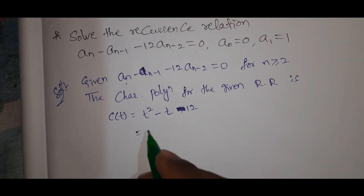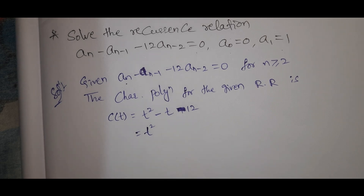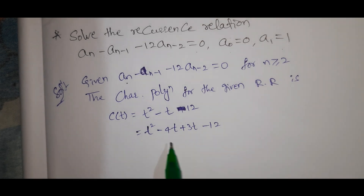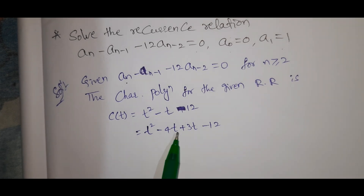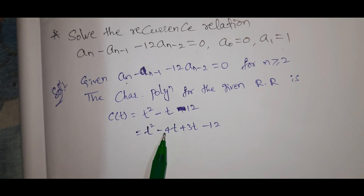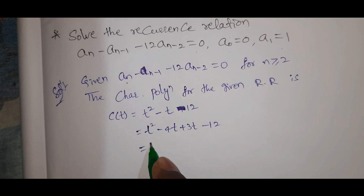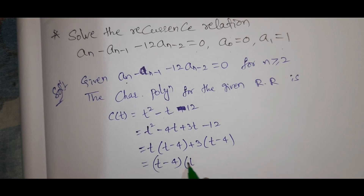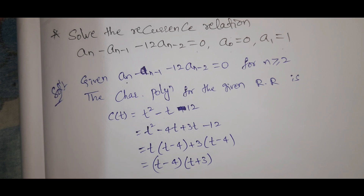See here: t squared minus 4t plus 3t minus 12. Factoring: minus 4 and 3 give minus t. So t(t minus 4) plus 3(t minus 4), which equals (t minus 4)(t plus 3).